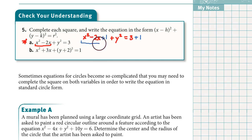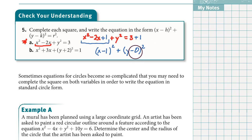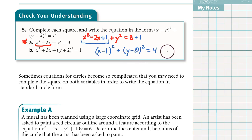Now factor the trinomial using parentheses: x minus 1 squared. For the letter y, we can write y minus 0 squared to better fit the format. On the right side, 3 plus 1 equals 4. This gives us the format we want for a circle. The center is at (1, 0) and the radius is 2.